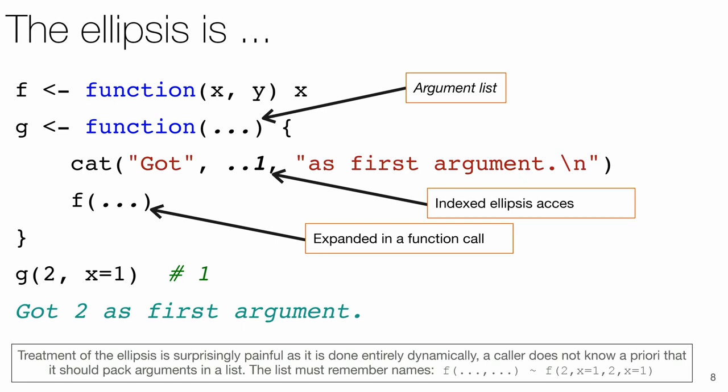The semantics is to expand the list as if each element was written by hand. This happens before the argument matching takes place. Note also that the ellipsis captures the names when created. Thus, the call to G will return 1, since it will get matched by name in the call to F.